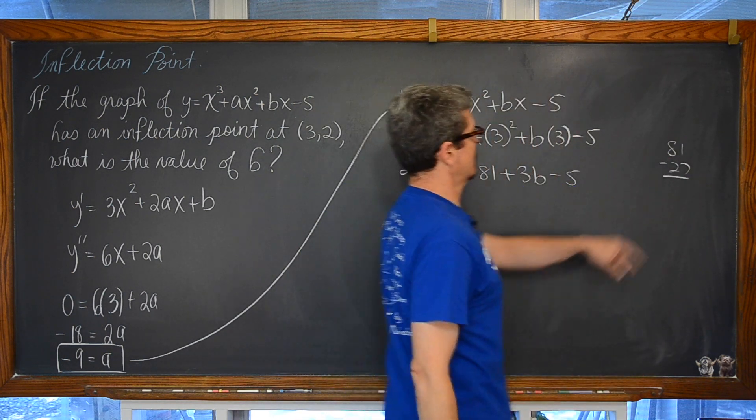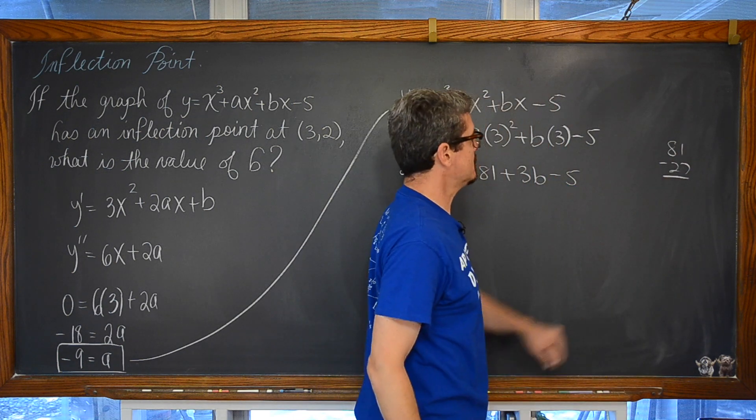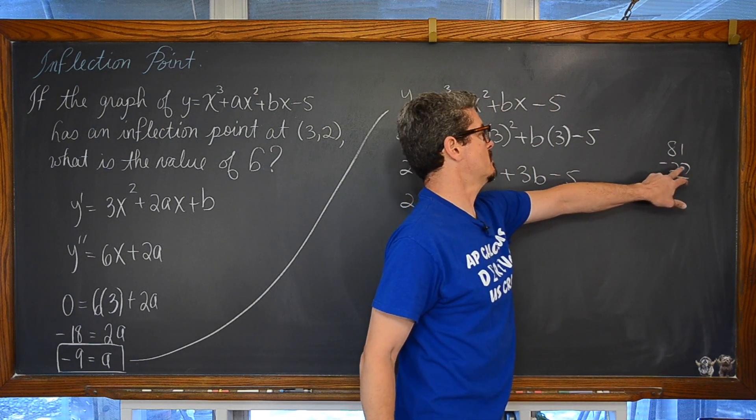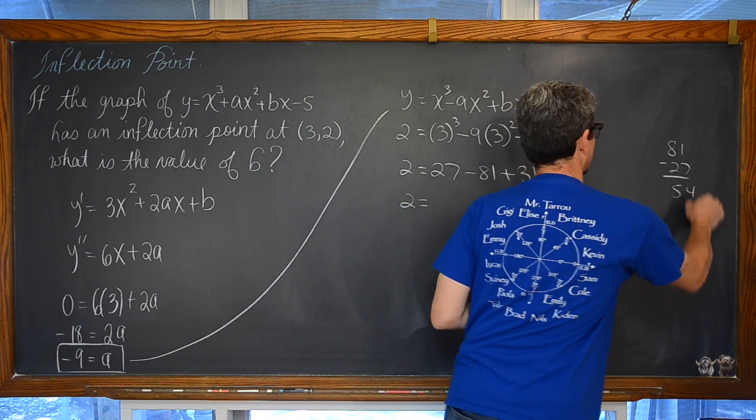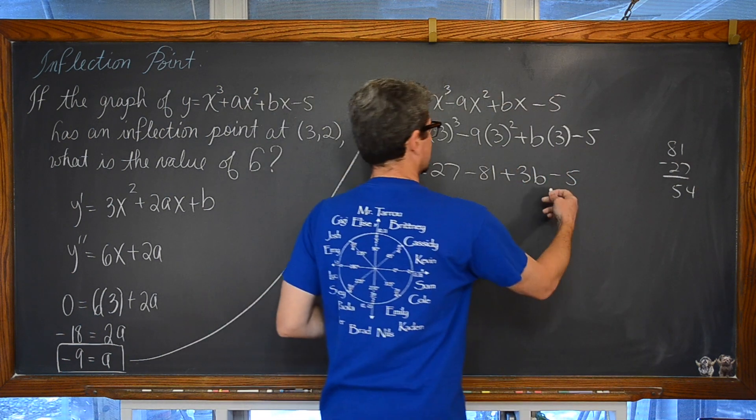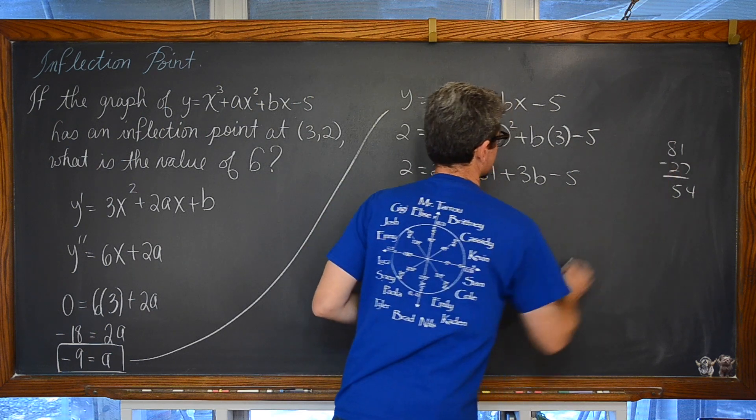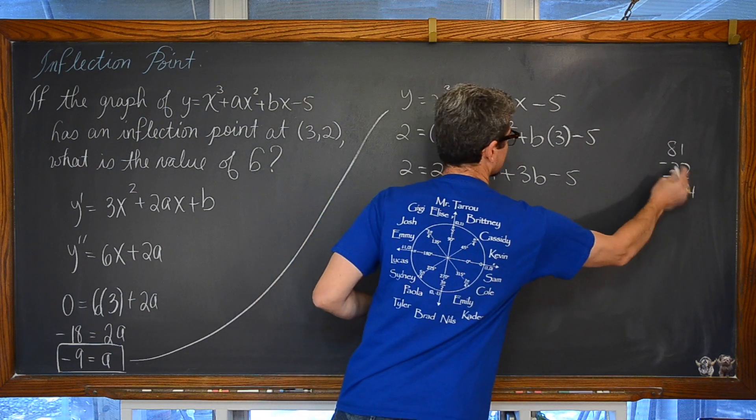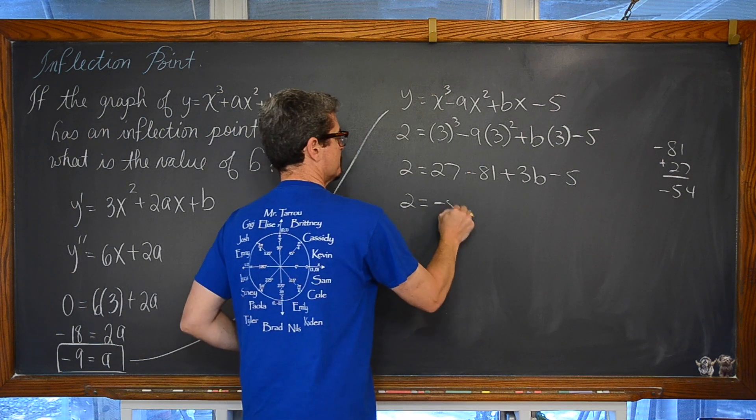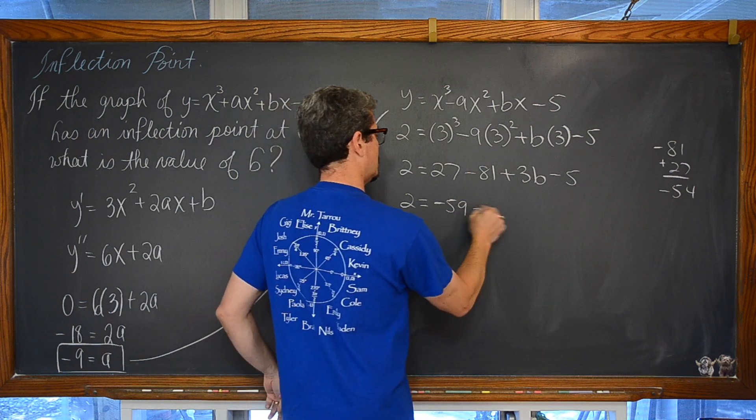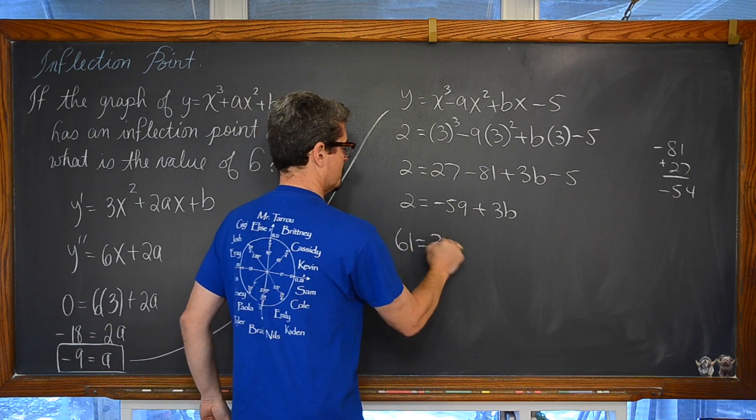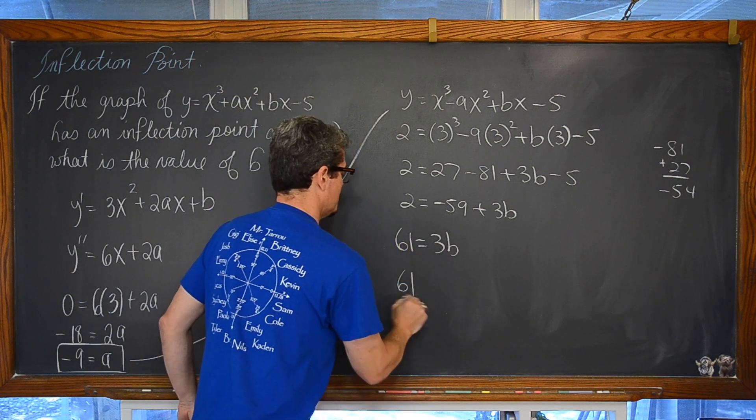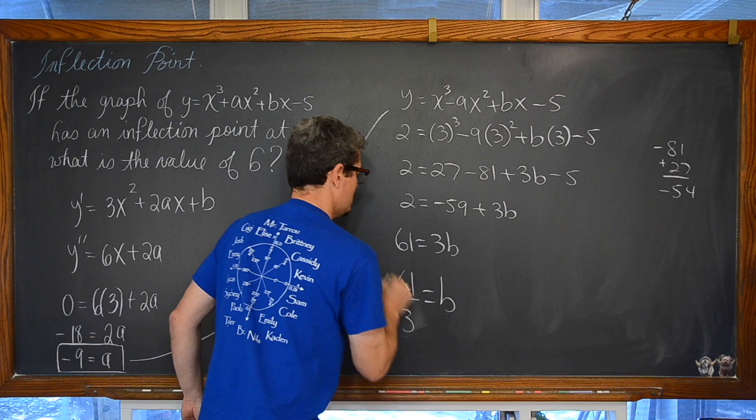So we have 81, 61, and 61 minus 7 is 54. And that is negative because 81 is actually negative. So negative 54 minus 5 is negative 59 plus 3b. Now we are looking at 61 is equal to 3b. And 61 over 3 is equal to b.